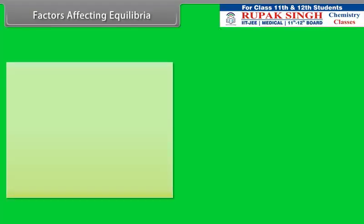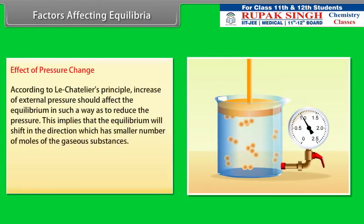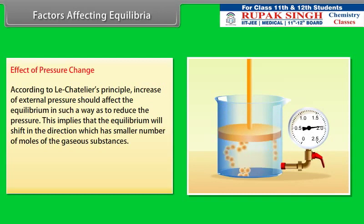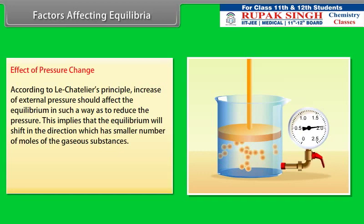Effect of Pressure Change: According to Le Chatelier's principle, an increase in external pressure should affect the equilibrium in such a way as to reduce the pressure. This means the equilibrium will shift in the direction which has a smaller number of moles of gaseous substances. For example, if we increase the pressure, the volume decreases and the number of molecules per unit volume increases. This effect is counterbalanced if the equilibrium shifts to the side with fewer moles, so an increase in pressure in this case will favor the forward reaction.